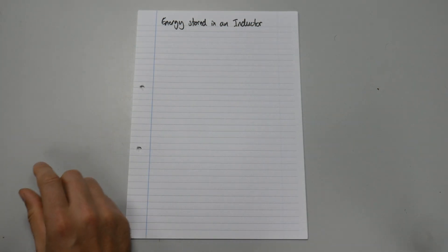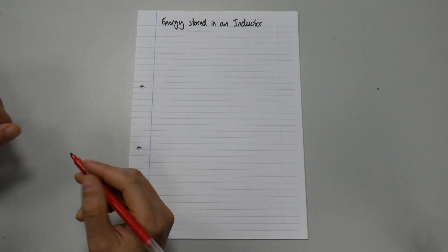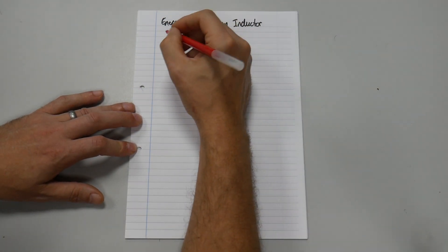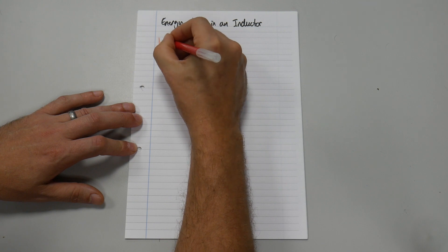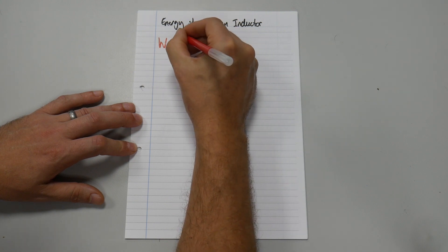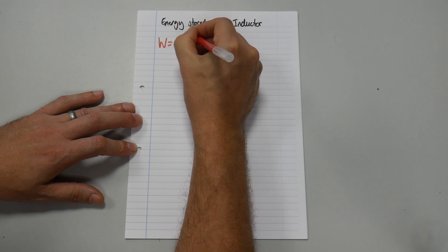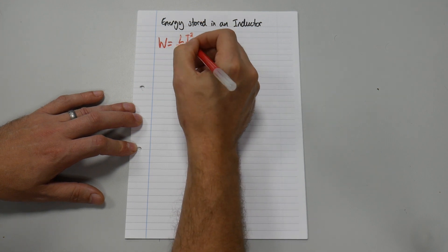And let's change my colour pen. So the formula is W equals capital L capital I squared over 2.